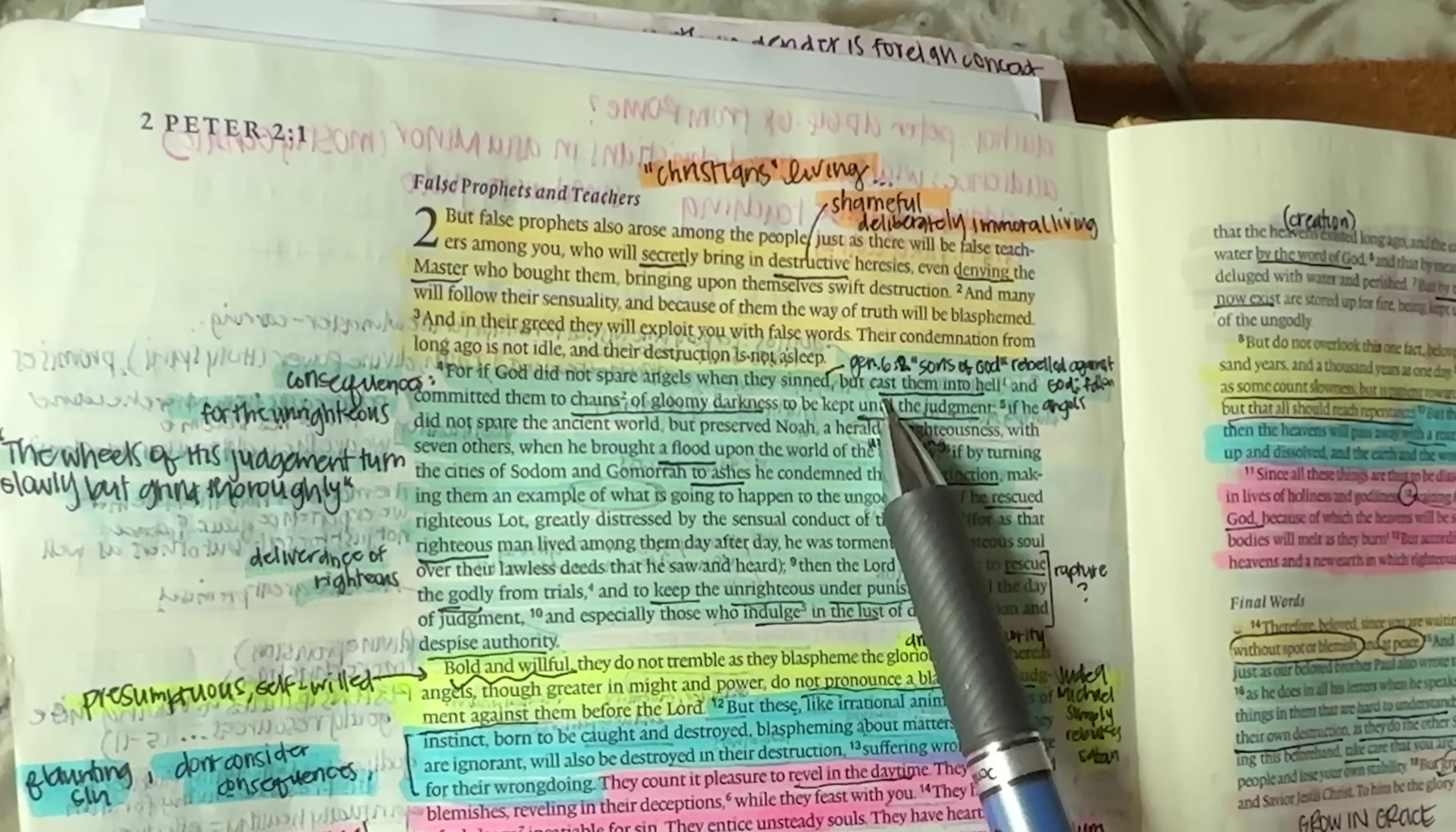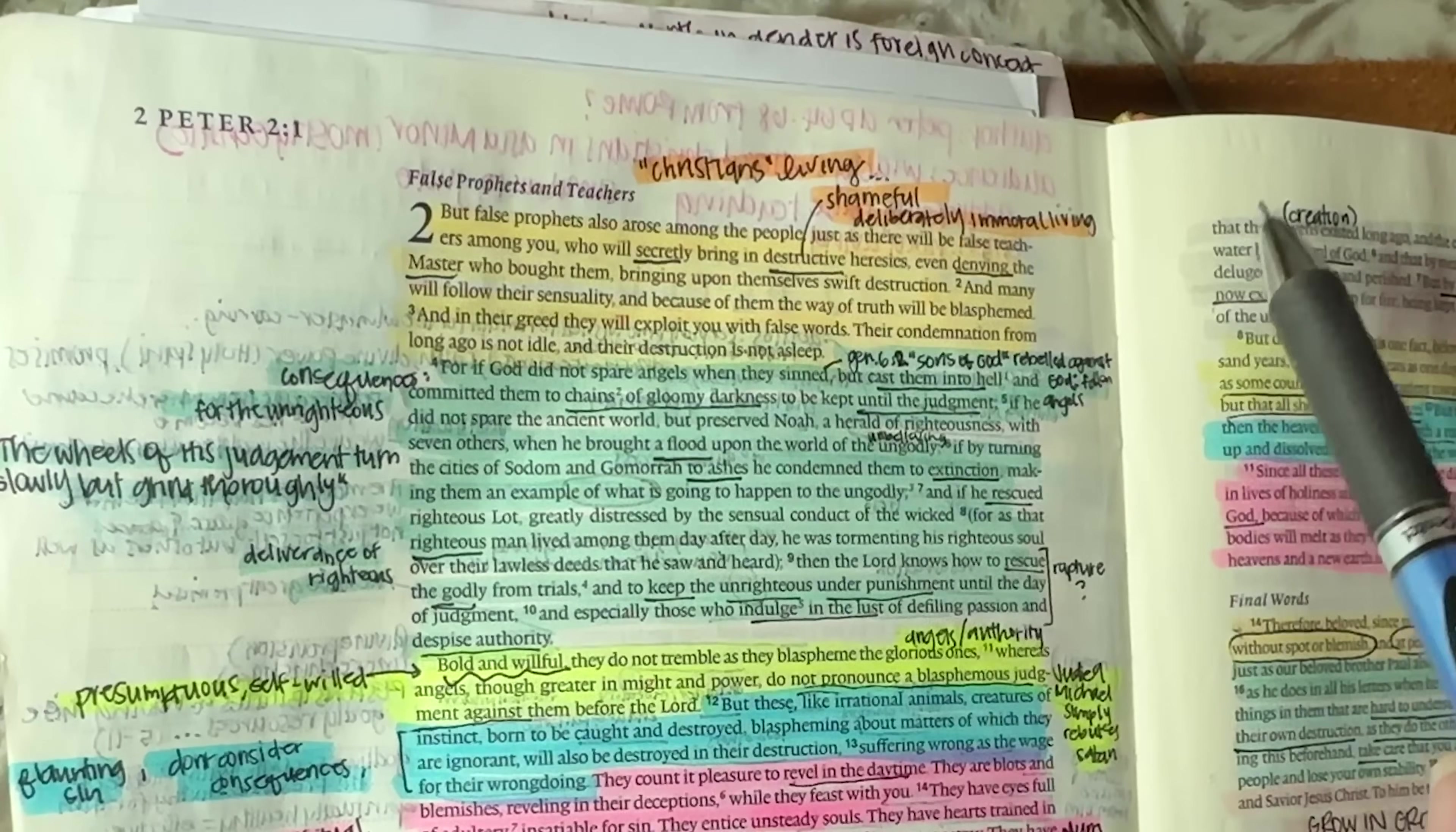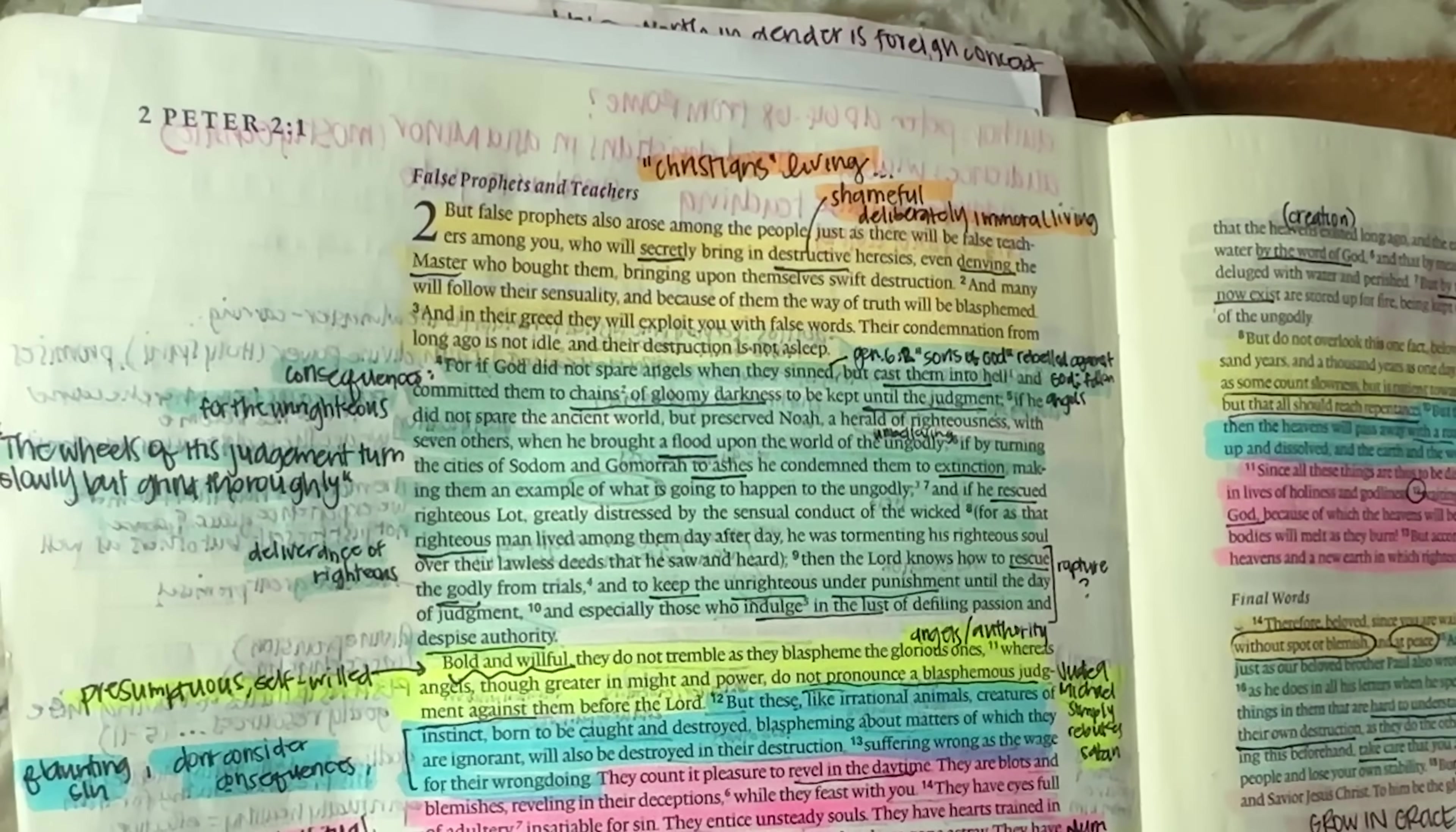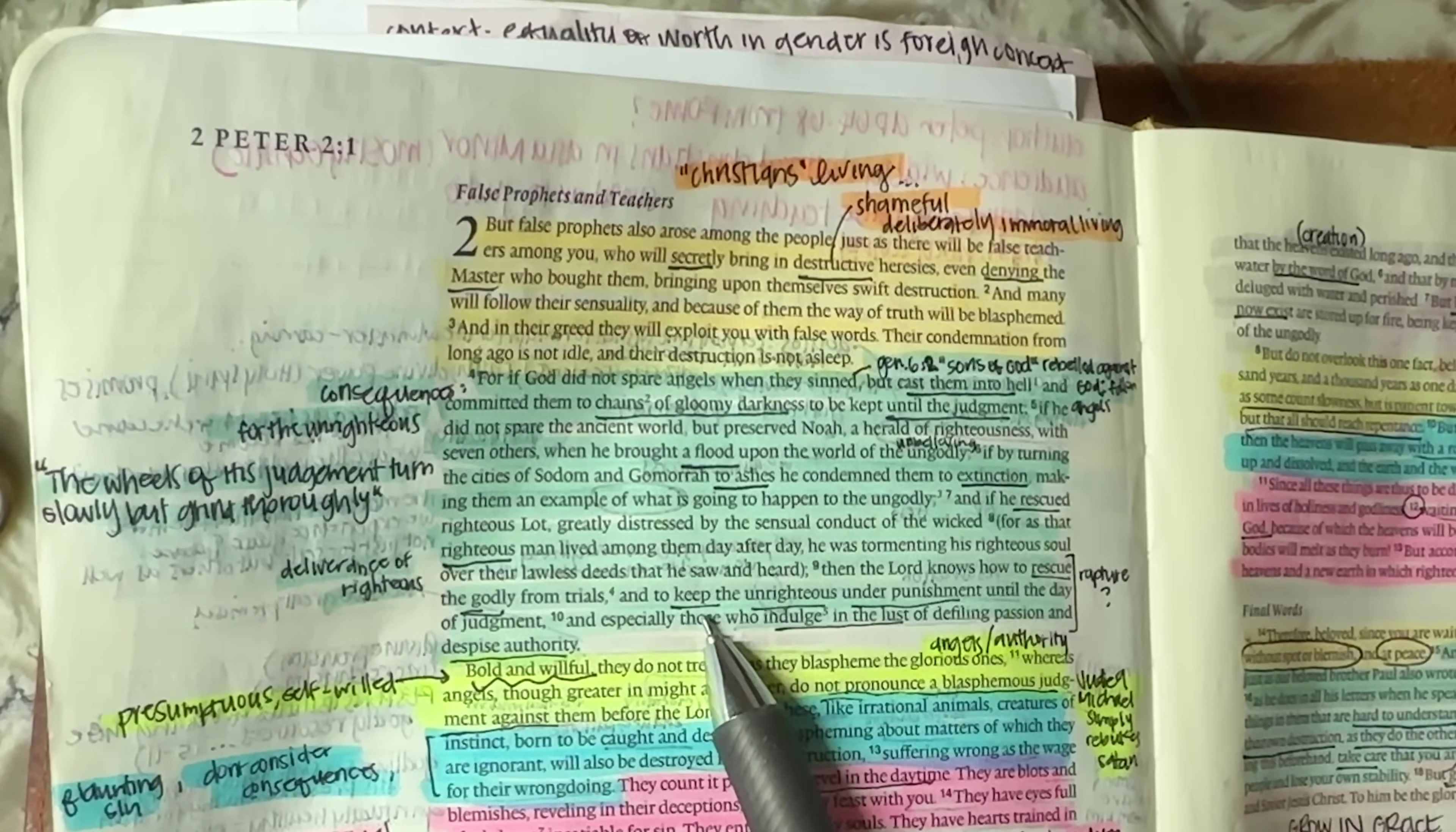And when he was talking about these angels up here, by the way, these were either, and this is highly debated, the fallen angels who fell with Satan, or these were the sons of God who were the angels who rebelled against God and slept with the women, slept with humans in Genesis chapter six. So it could be either or, but regardless, both of them held to judgment, but he is also in the same breath saying those who are righteous though, will be delivered the same way that he rescued Lot.